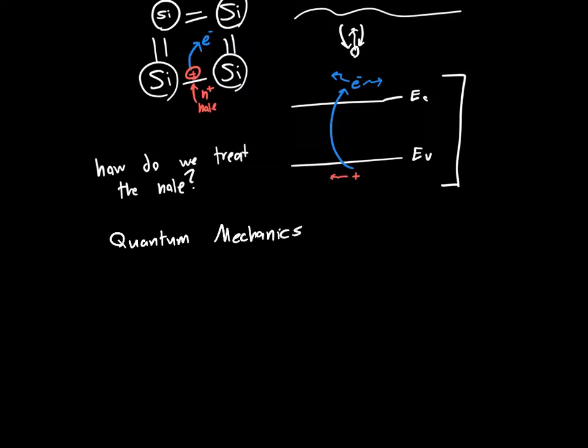So remember, the model we've been using for most of what we've derived so far, the density of states et cetera, is that we've got an electron inside a box. So it can move around inside the box however it pleases, but it cannot escape the box. It's not allowed to leave. And from this, we got the energy turns out to be quantized.